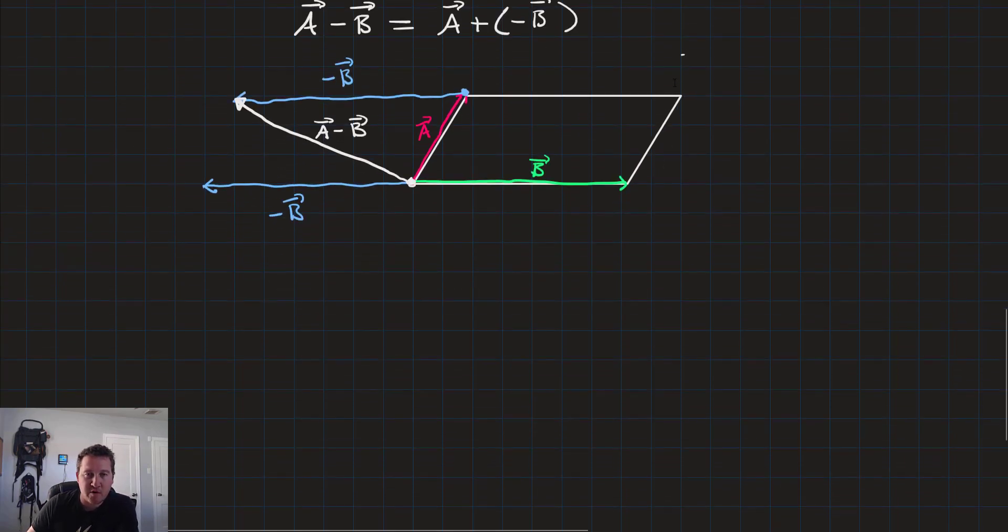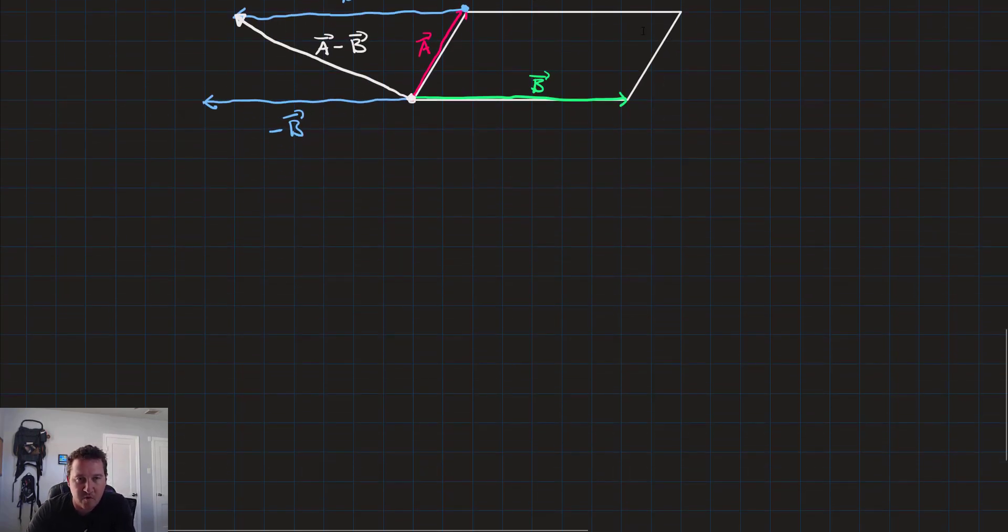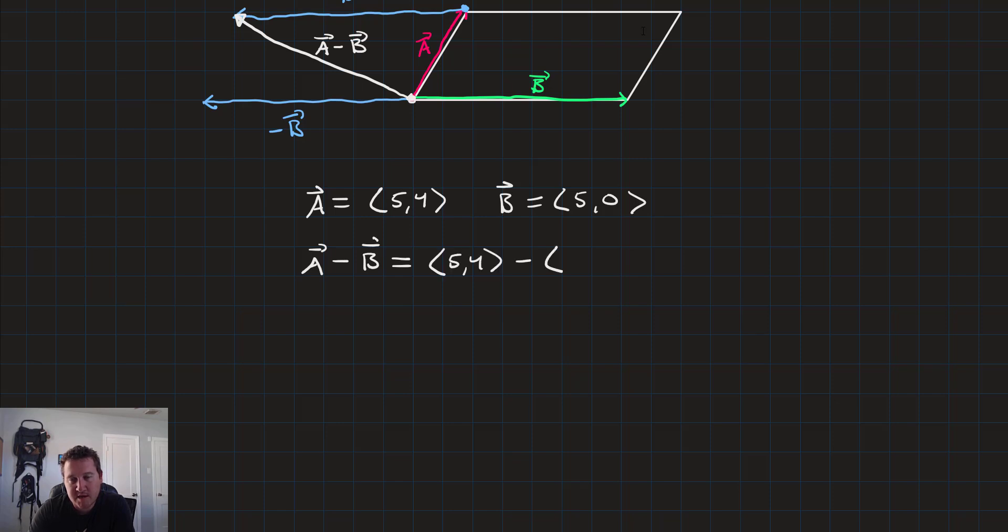Let's go ahead and try that numerically. Let's use the same vectors as before. We'll still have vector a is equal to 5, 4, and vector b is equal to 5, 0.